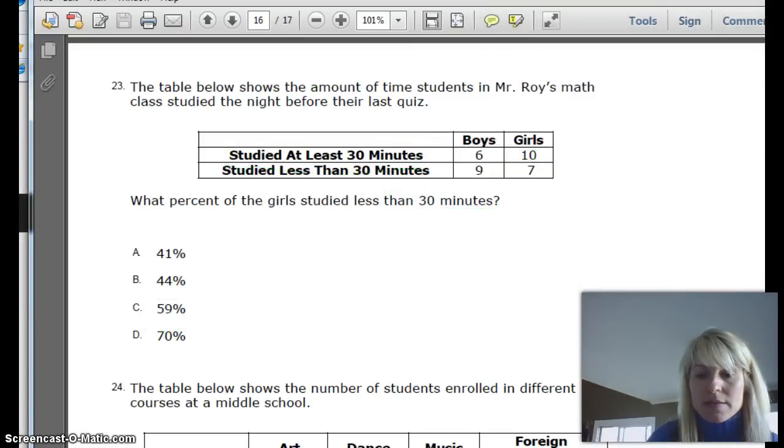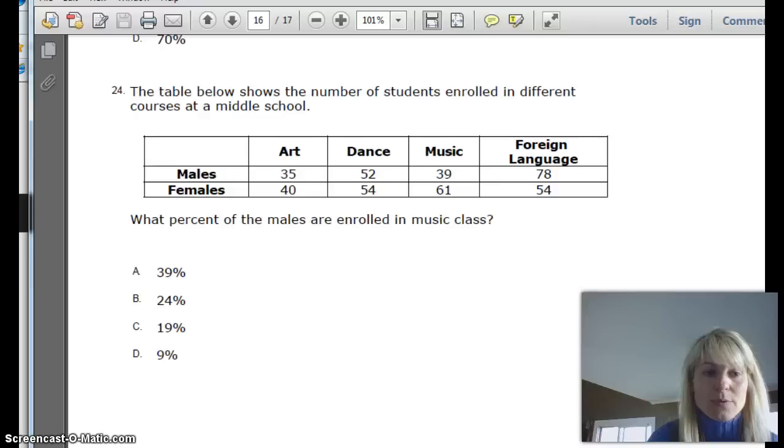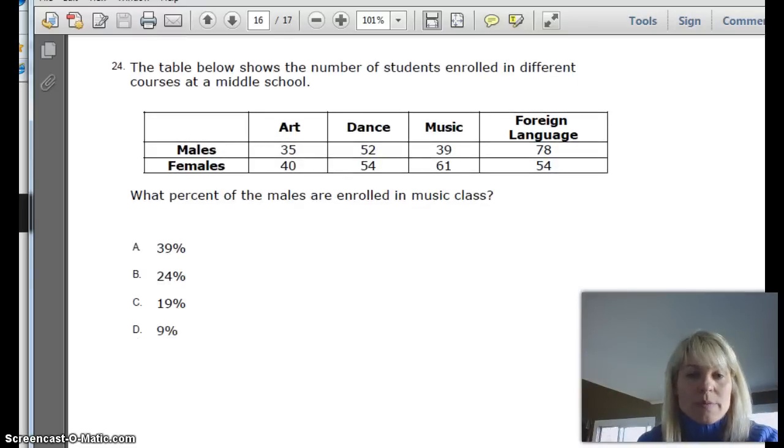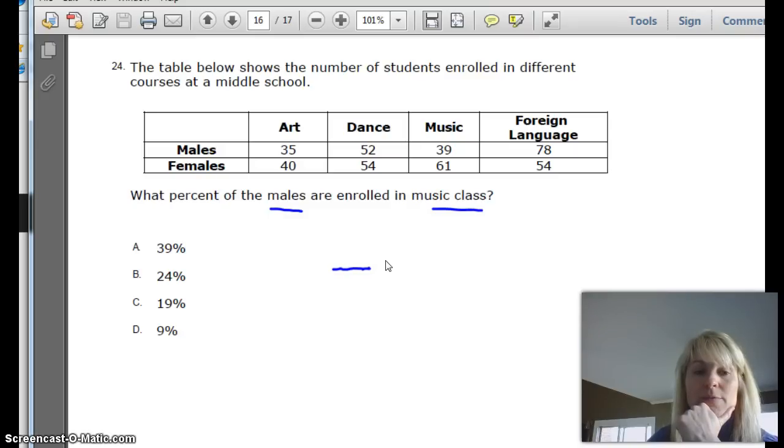All right. So let's do this. You guys try 24 here. It says the table below shows the number of students enrolled in different courses at a middle school. What percent of the males are enrolled in music class? So we know the percent. We need to know the percent of males in music class. So you need to come up with a ratio of the amount we're talking about to the total. And tomorrow I would like you to see this ratio. And then I want to know what your decimal is. And then I want to know what your percent is.